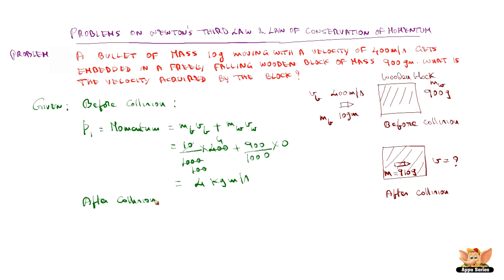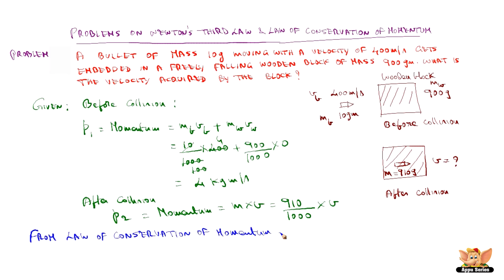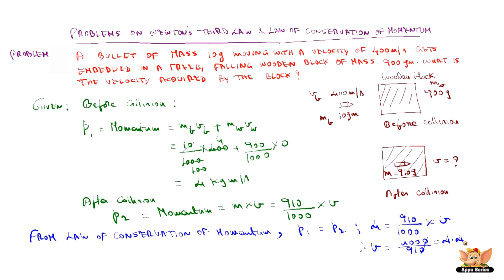After collision, the momentum p2 is equal to the combined mass moving together: (910/1000) × v, where v is unknown. From the law of conservation of momentum, momentum before collision equals momentum after collision. So p1 = p2, meaning 4 = (910/1000) × v, therefore v = 4000/910, which is 4.4 meters per second.